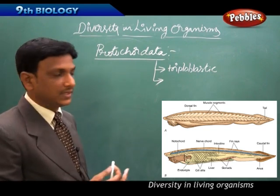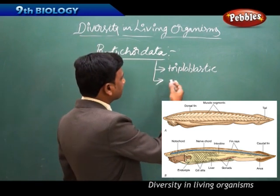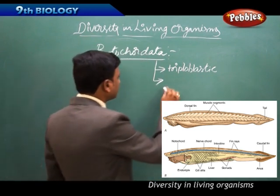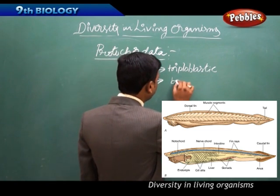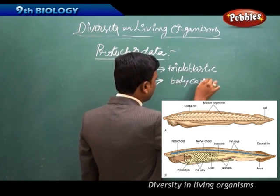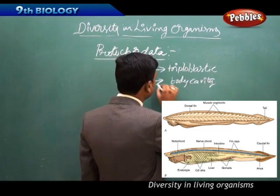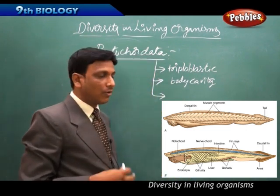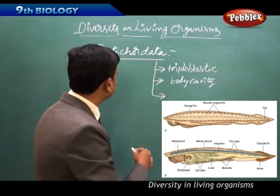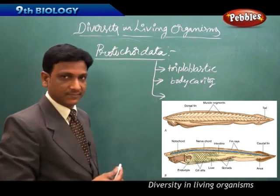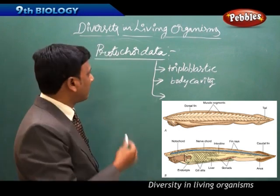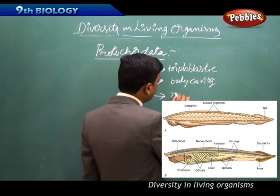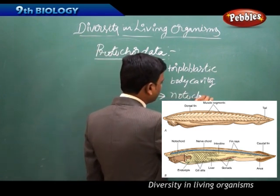Protochordata have a body cavity (coelom) and organ differentiation. More importantly, compared to previous phyla, this phylum has an additional feature: the presence of a notochord.